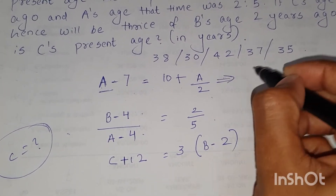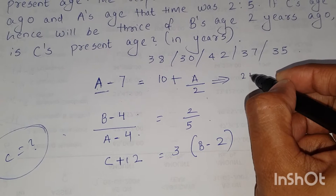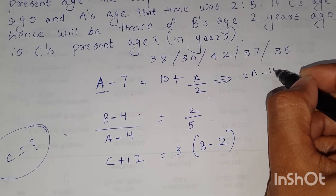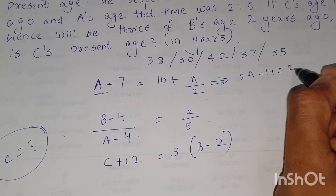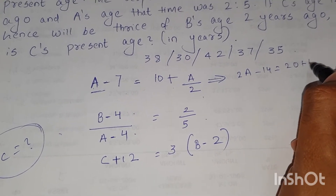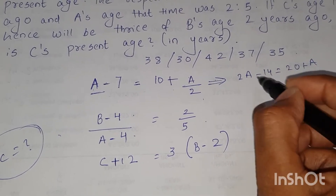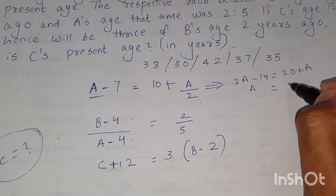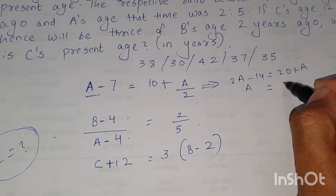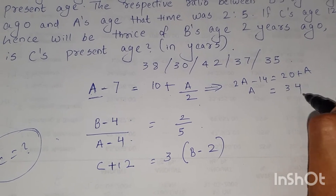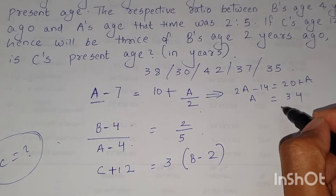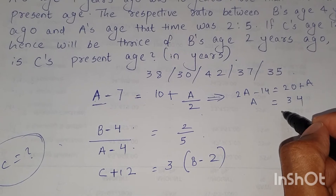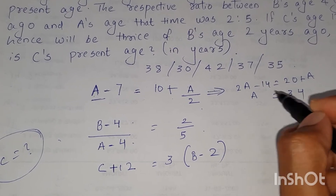This can be solved as 2A minus 14 is equal to 20 plus A. So 2A minus A gives A is equal to 20 plus 14, which is 34. We got the value of A as 34.